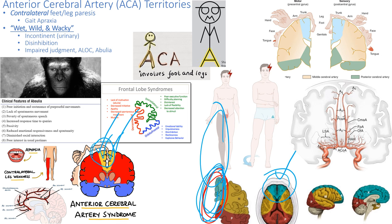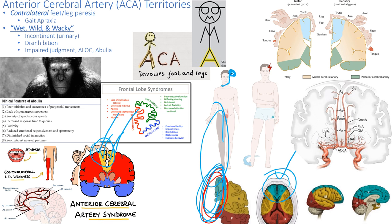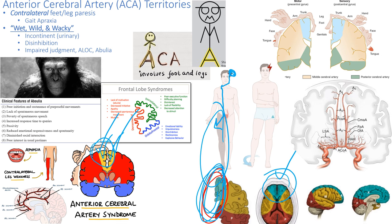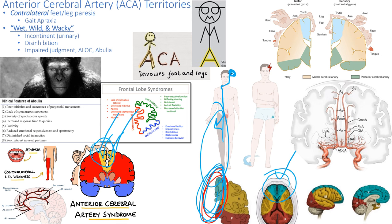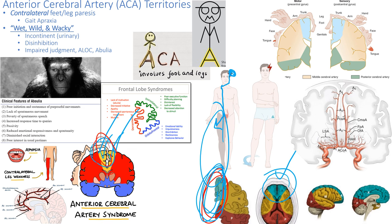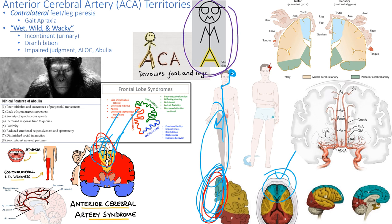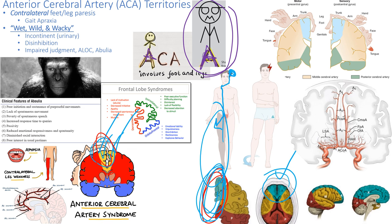Are the legs affected contralateral or ipsilateral? It's contralateral — because it came down from this side of the brain and decussated below the medulla, and came out the spinal cord to the legs. So it's going to affect the contralateral side. If I have a left ACA stroke, I have right contralateral leg paresis. The ACA does not feed the arm — it feeds only the legs, genitalia, and feet. You can draw a little mnemonic figure: ACA causes incontinence — put an A in the bladder — and leg problems. It causes wet, wild, and wacky.